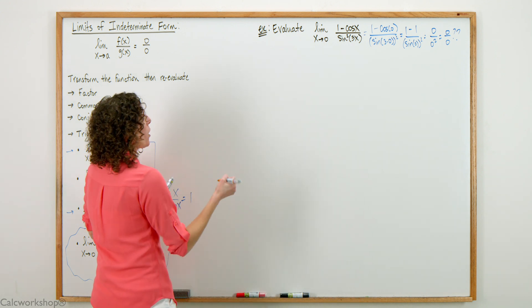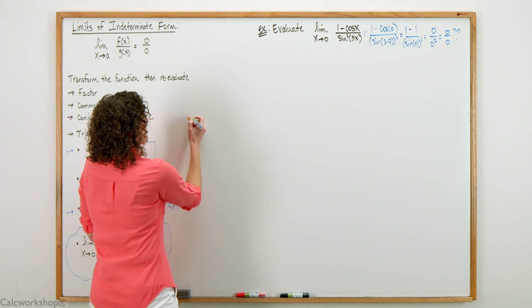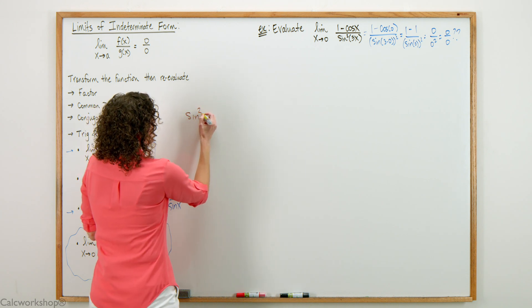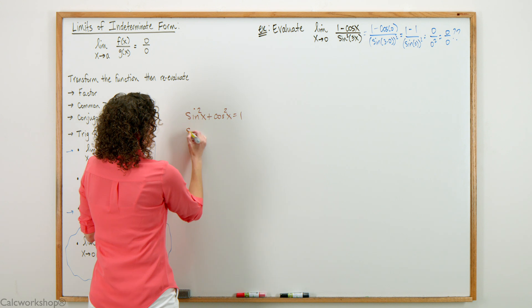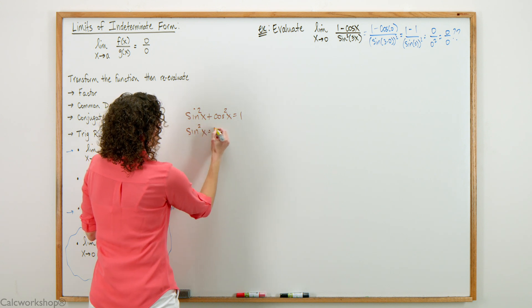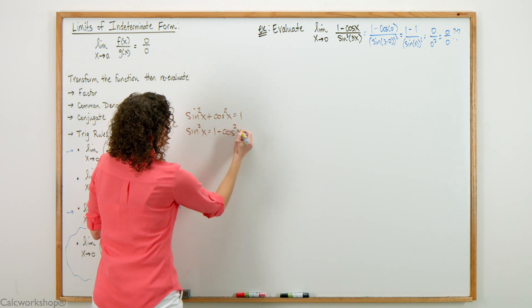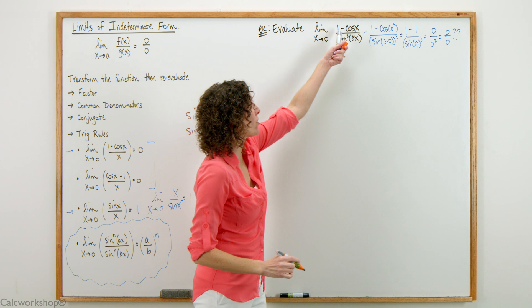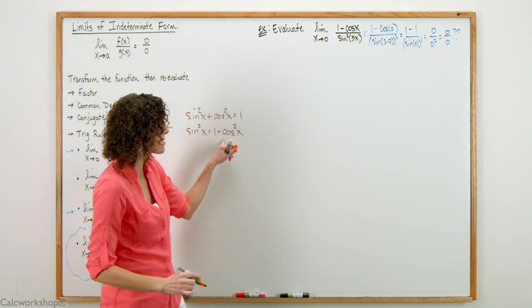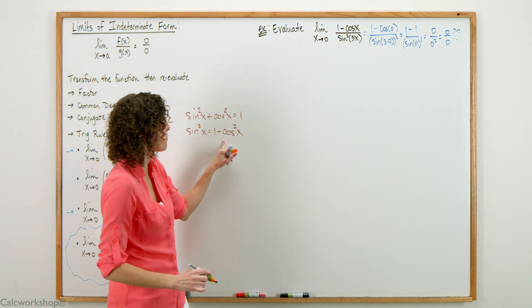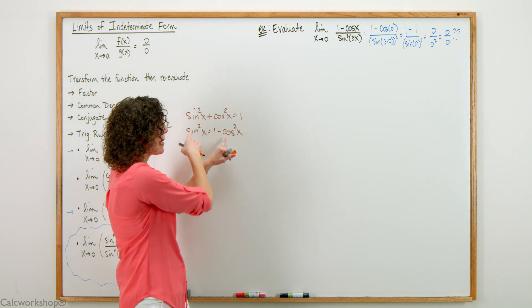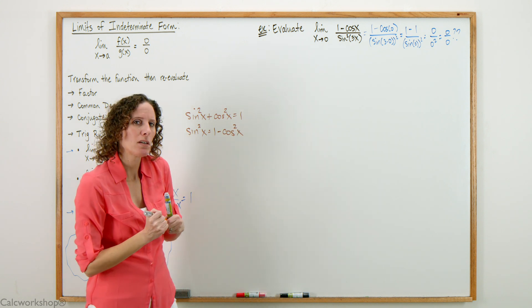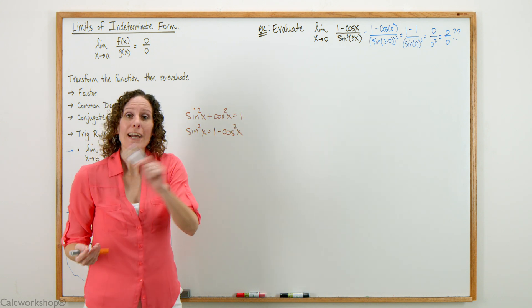We know from trigonometry that sine squared plus cosine squared equals 1, which means sine squared x equals 1 minus cosine squared x. Look how similar those are. The only thing missing to transform the numerator into a sine squared is the squared function. I can use a conjugate.